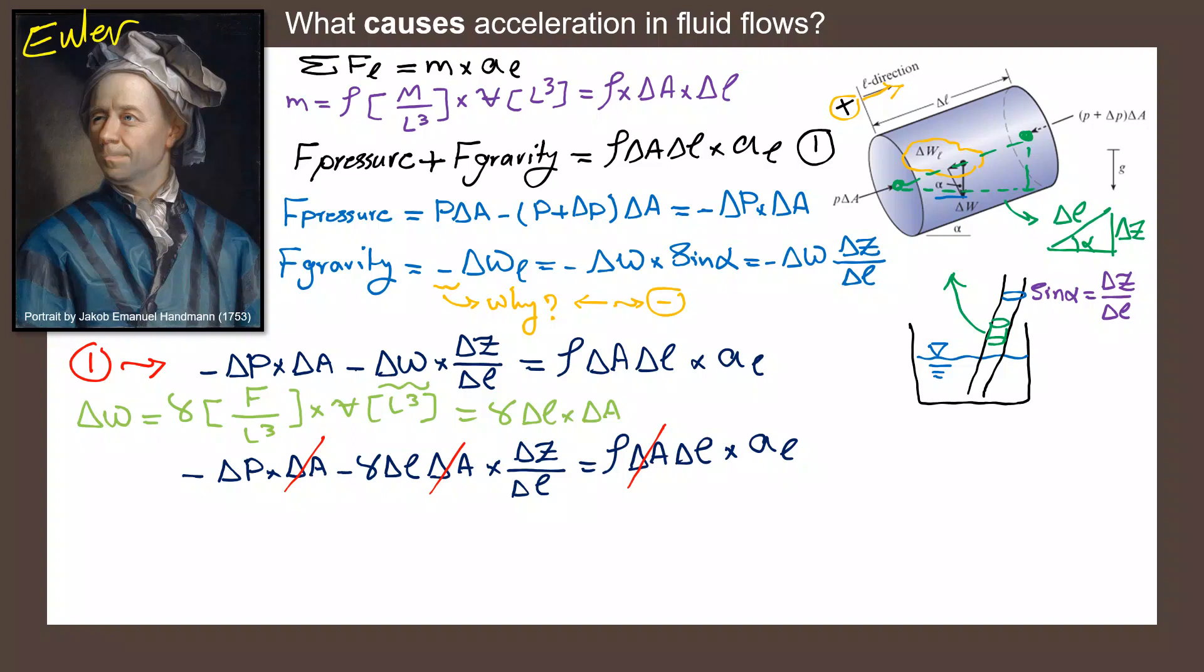If I do that, then I will have negative ΔP divided by ΔL, minus γΔZ divided by ΔL equals ρ times Aₗ.